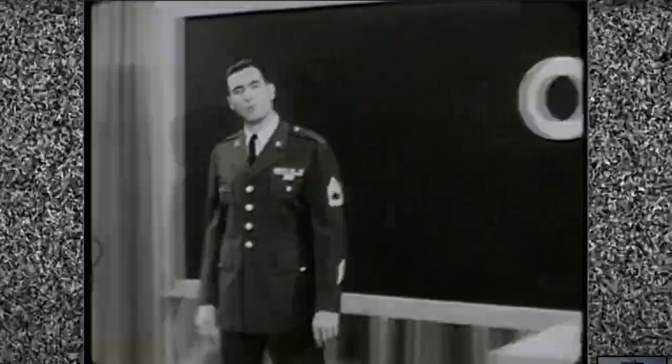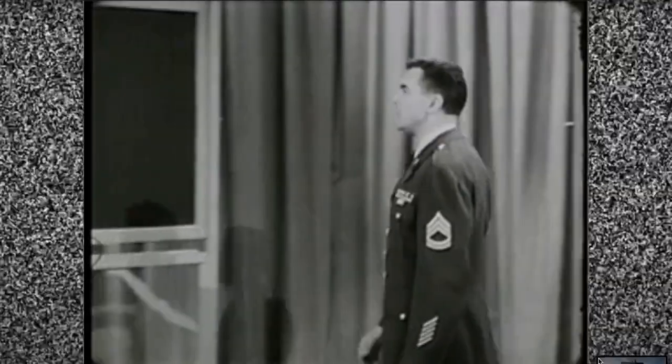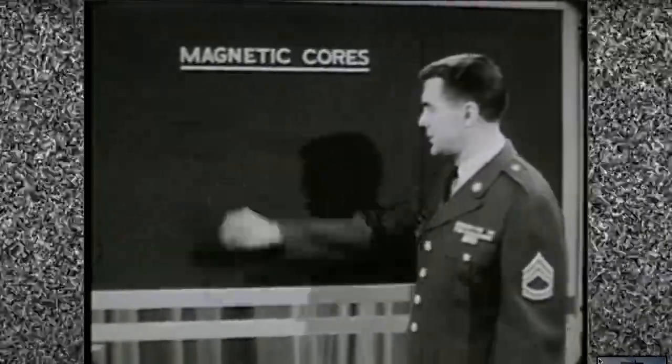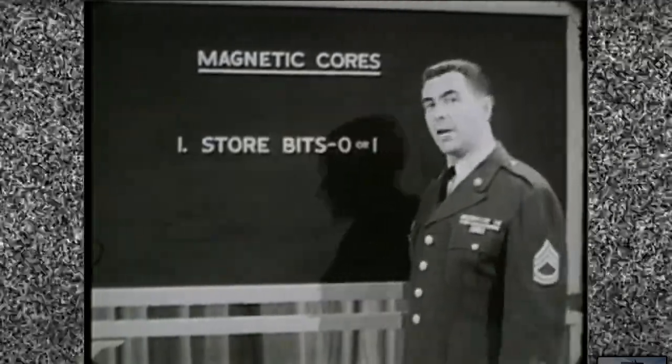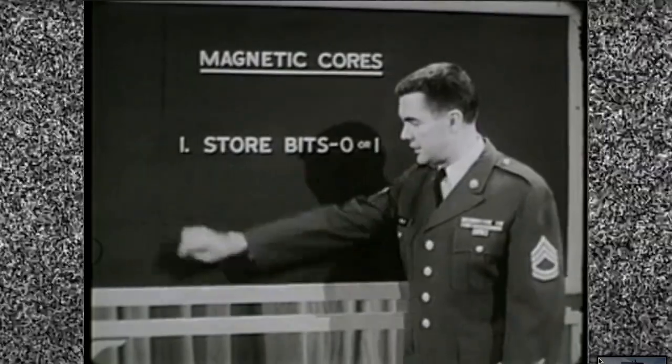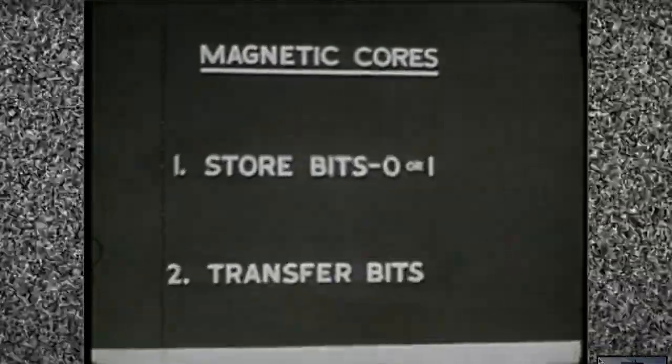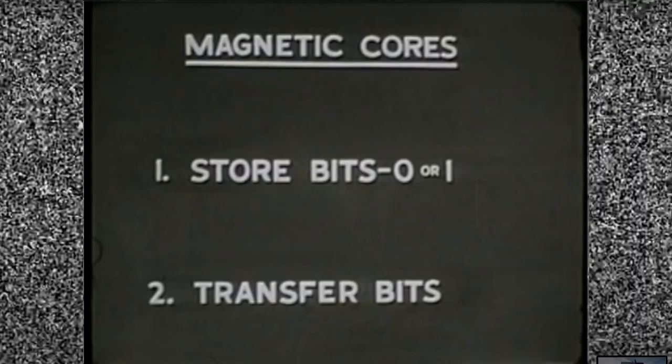So far we've been establishing the function of magnetic cores. They store binary digits or bits, zero or one. Now we're going to see how they do it and also how they transfer bits from one core to another.